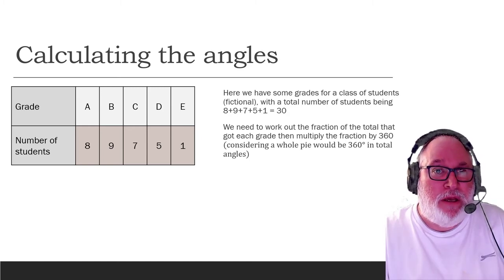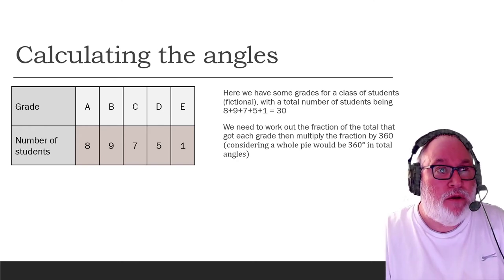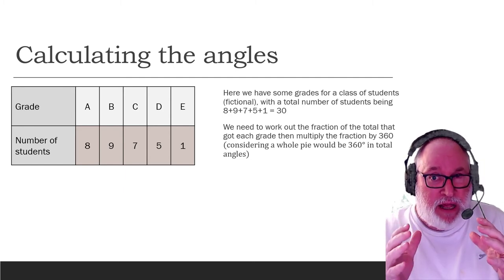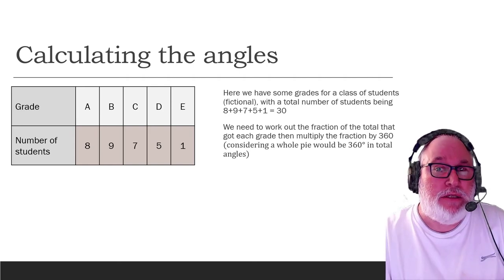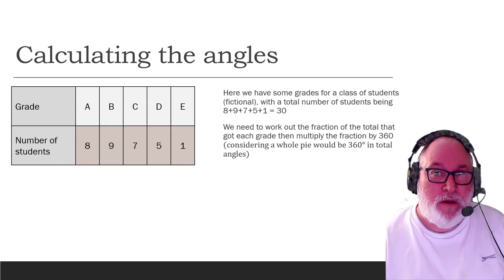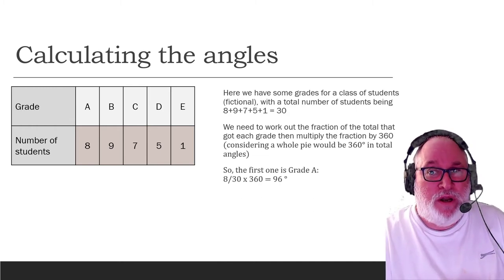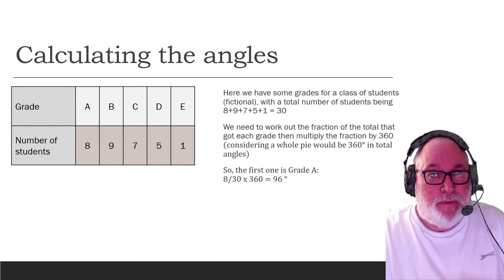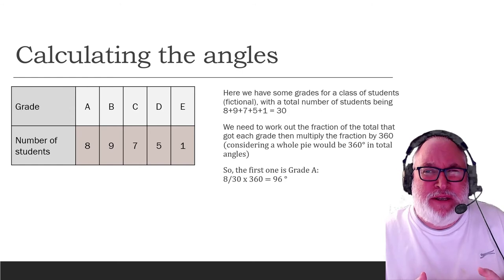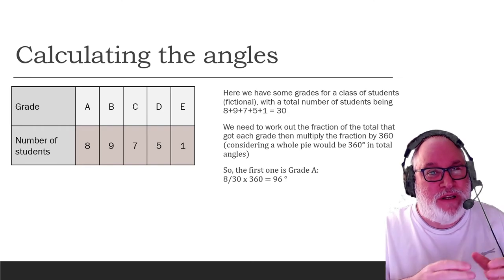So the total is 30. So now we need to work out the fraction of the 360 degrees for each of these, so that we can see. Grade B, the total amount of students that got Grade B was nine, nine out of 30. So that's going to be the largest, and we want to illustrate that as being the largest segment. So it's going to have the greatest degree, the greatest segment of 360 degrees. So the first one is Grade A, so we take eight as being a fraction of 30.